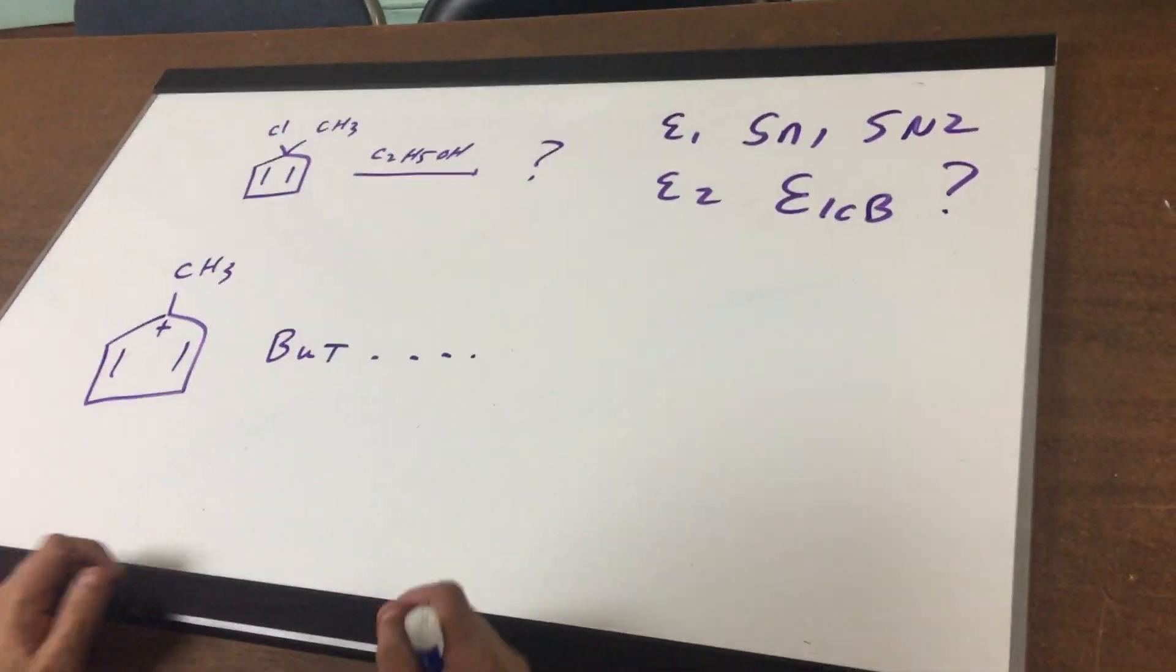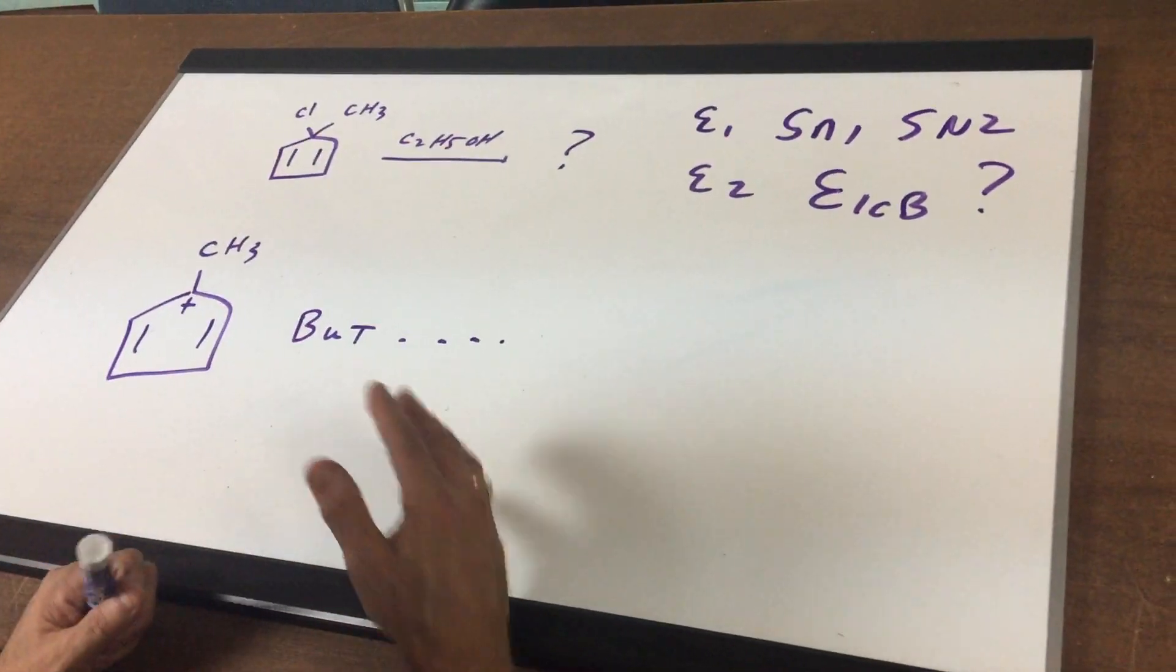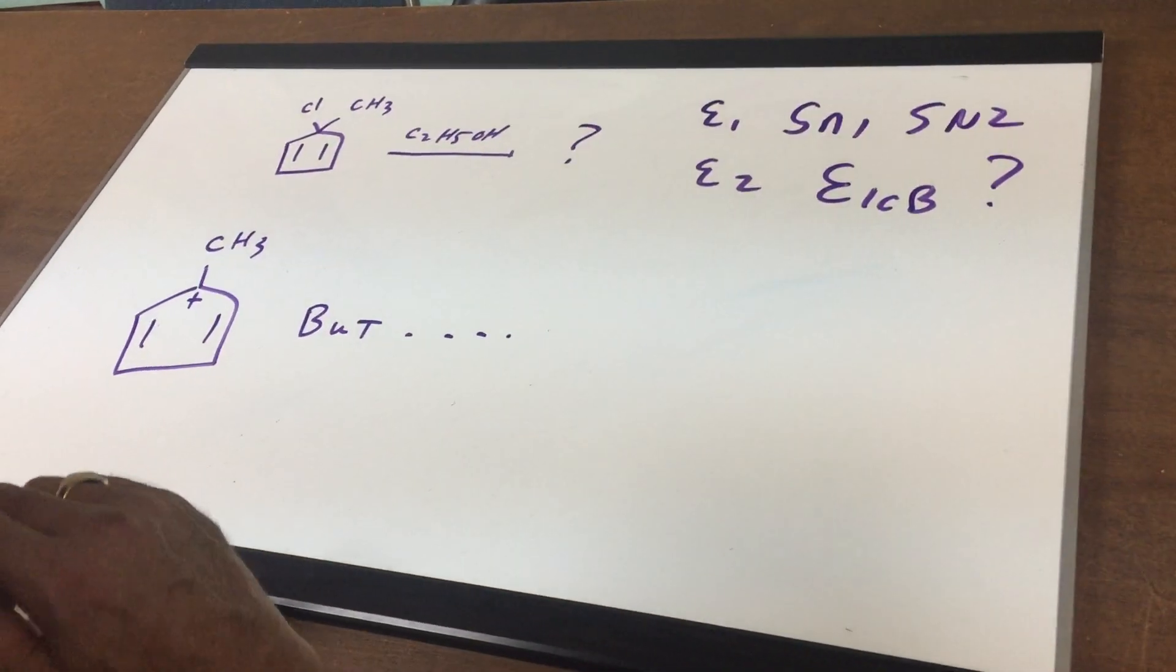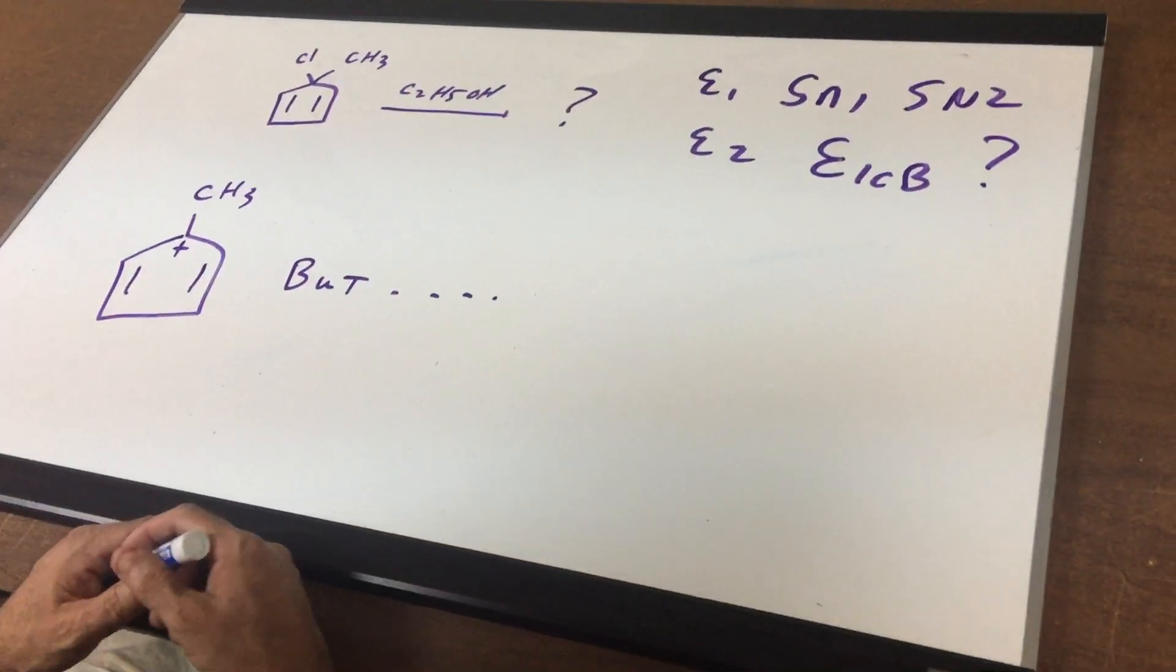I give you this diene and I say to you what kind of mechanism will it undergo if it was treated with ethanol? Now would it be an E1, an E2, an E1CB, SN1, SN2?